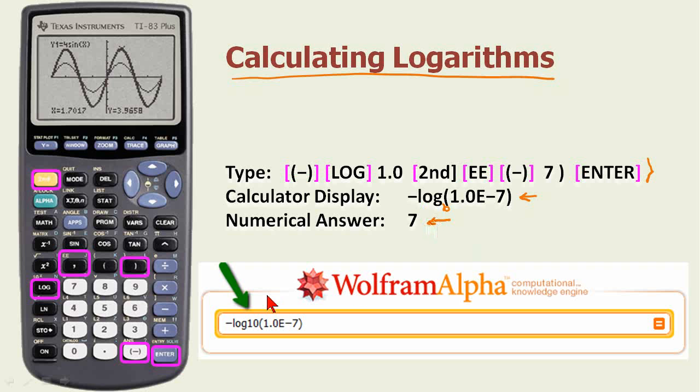If you were to use Wolfram Alpha, like this green arrow points to, you would actually have to type in the base, log to the base 10 of this number, which results in the answer of 7. This is useful because you can run a sample calculation on your calculator and you'll know whether you're doing the process correctly.